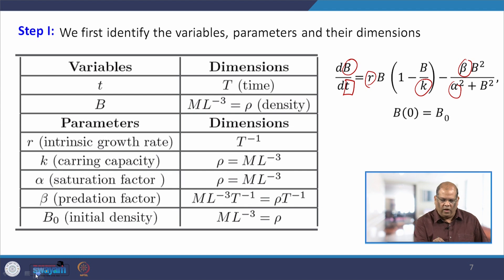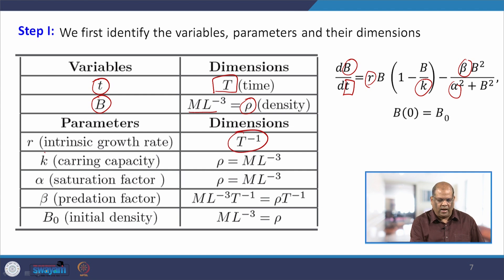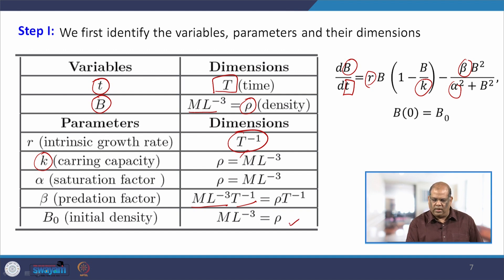We put the dimensions in tabular form. Variable t has dimension capital T; B is density, so mL⁻³, denoted rho. For the parameters: r (intrinsic growth rate) is per time T⁻¹; k (carrying capacity) is density rho; alpha (saturation factor) is again density rho; beta (predation rate) is density per time, mL⁻³·T⁻¹; and B0 (initial density) is mL⁻³, which is rho.